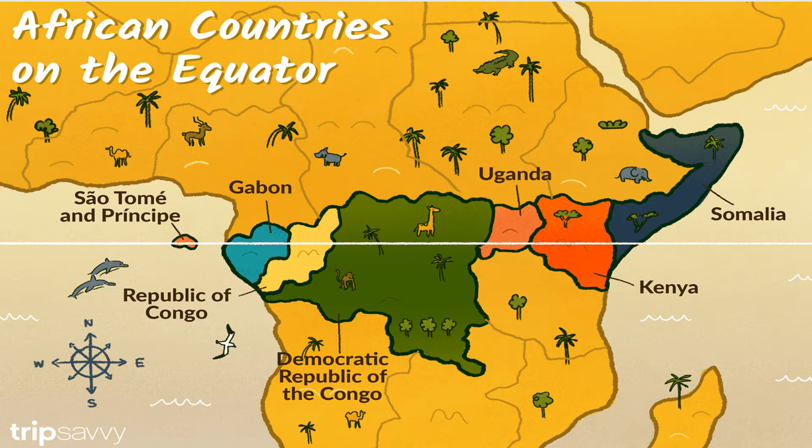You can see in the map of Africa the countries through which the equator passes. Gabon, Republic of Congo, Uganda, Kenya, and Somalia are the countries from which the equator passes through.